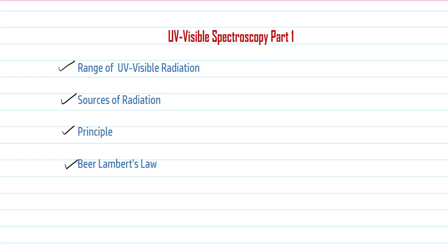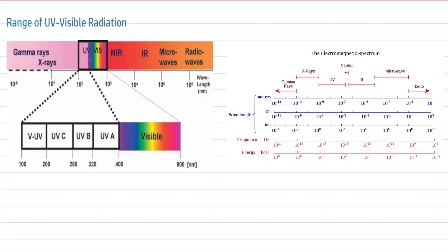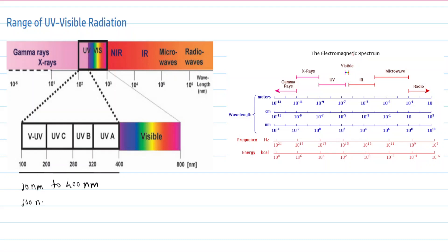Let's begin with the range of ultraviolet and visible radiation. In the electromagnetic spectrum, the ultraviolet region extends from 100 nanometers up to 400 nanometers. In some books, this range is given as 10 nanometers up to 400 nanometers, but in this study we will take the range 100 nanometers up to 400 nanometers.